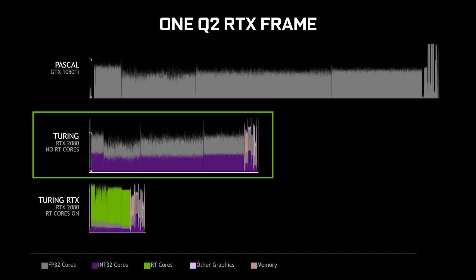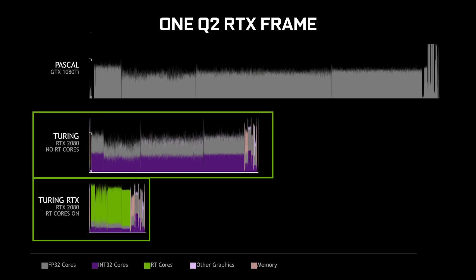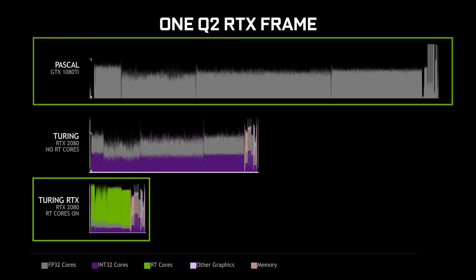The graph shows two different colors — one for integer and one for floating point — to show the benefit of simultaneous integer and floating point execution. The final step is to run ray tracing on the RT cores. Using the same RTX 2080, the green you see here is the ray tracing execution being done on the RT cores. Comparing that to an RTX 2080 without RT cores, it's about three times the performance, and comparing that to a Pascal 1080 Ti, it's about six times the performance.